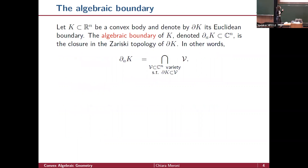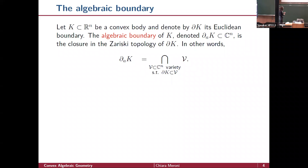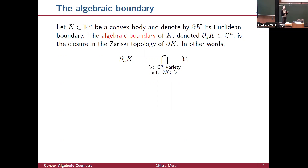What can algebraic geometry do for convexity? The main character here is the so-called algebraic boundary. Let K in R^n be a convex body, and denote by ∂K its topological boundary. The algebraic boundary — denoted with a subscript 'a' — lives in the complex space and is defined as the Zariski closure of the topological boundary. Equivalently, the algebraic boundary is the smallest variety that contains the topological boundary.